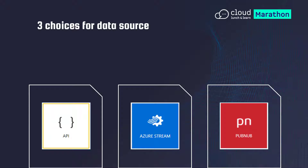To go ahead and create a real-time dashboard, you start off by picking from one of the three data sources that are available. The one I'll talk about today and that you'll try out in the labs is the API option. But Azure Stream and PubNub are the options you'll use if you are currently using those services — for example, if you have IoT devices that are constantly generating data, you can connect it up with Azure Stream on your dashboard to view that in real time.